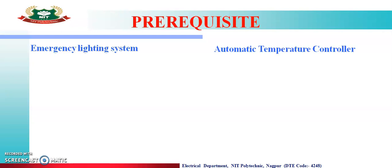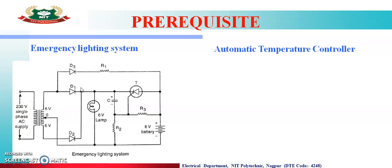In the previous lecture we studied the emergency lighting system and automatic temperature controller. This is the circuit diagram of the emergency lighting system. In this we are using one transformer which converts 230V supply to 6V supply. Here there are three diodes, in which diode D1 and D2 perform the rectifier action.